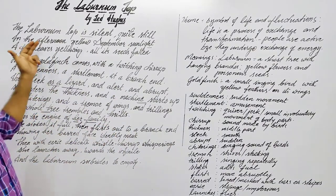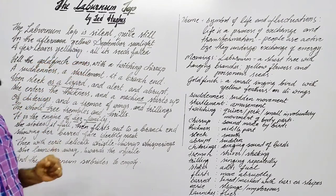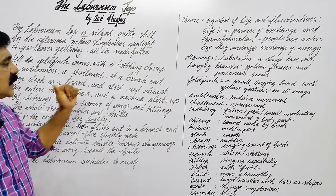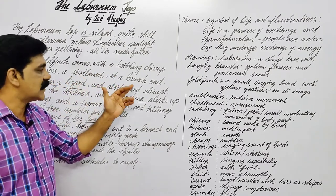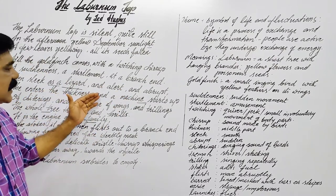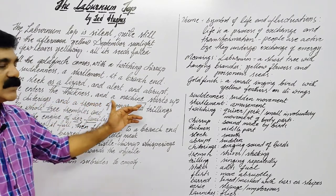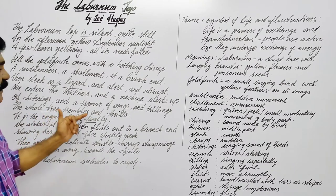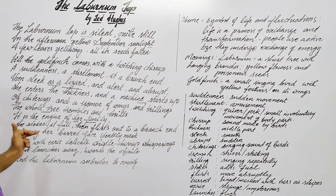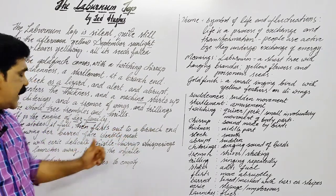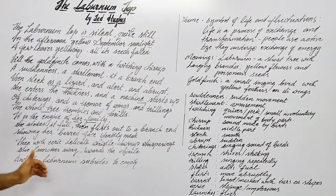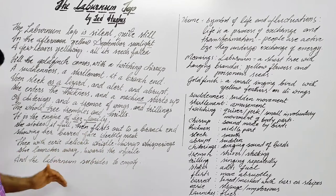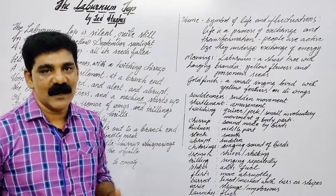Let's go through the poem. 'The Laburnum top is silent, quiet still in the afternoon yellow September sunlight. A few leaves yellowing, all its seeds fallen. Till the goldfinch comes with a twitching chirrup, a suddenness, a startlement at a branch end. Then sleek as a lizard and alert and abrupt, she enters the thickness and a machine starts up of chitterings and a tremor of wings and trillings. The whole tree trembles and thrills. It is the engine of her family. She stalks it full, then floods out to a branch end, showing her barred-faced identity mask. Then with airy, delicate whistle, chirrup whisperings, she launches away towards the infinite. And the Laburnum subsides to empty.'